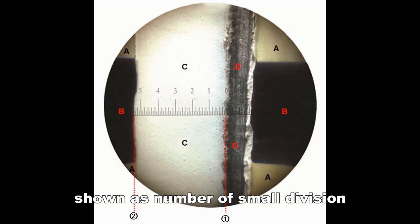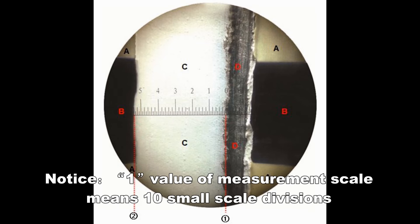The shown value is the number of small divisions. One value of the measurement scale means 10 small scale divisions.